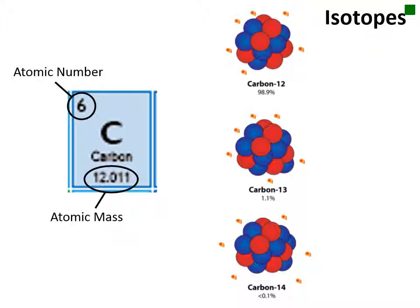While isotopes of an element have different weights, they chemically function exactly the same. This is because the chemistry of an atom is based on the number of electrons, and all isotopes have the same number of those.